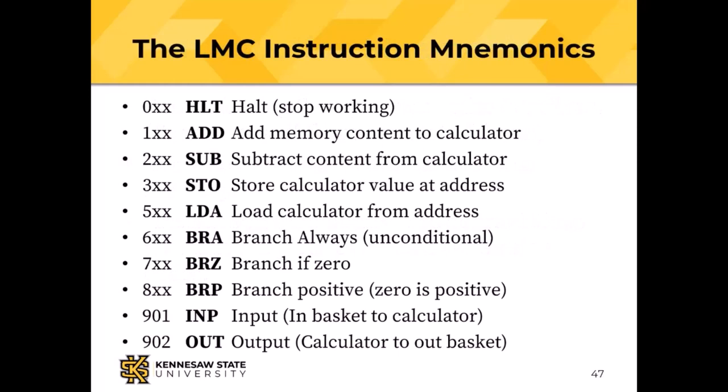Here they are — all three-character abbreviations: HLT for halt, ADD, SUB for subtract, STO for store, LDA for load the calculator, BRA for the unconditional branch, BRZ for branch if zero, BRP for branch positive, INP for input — in basket to calculator — and OUT for calculator to out basket.